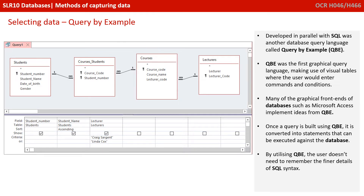Developed in parallel with SQL was another database query language called Query by Example, or QBE. Query by Example was the first graphical query language, making use of visual tables where the user would enter commands and conditions. Many graphical front ends of databases, such as Microsoft Access, implement ideas from Query by Example. Once the query is built using QBE, it is converted into statements that can be executed against the database. By utilizing QBE, the user doesn't need to remember the fine details of SQL syntax — they just need to understand how to use the graphical interface.